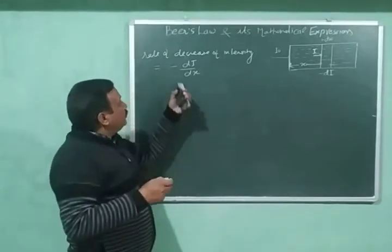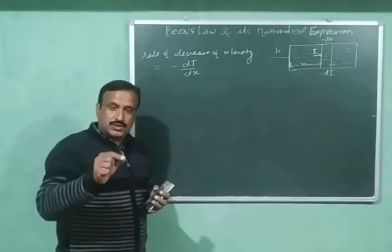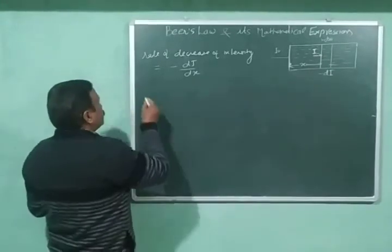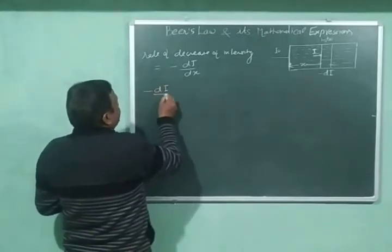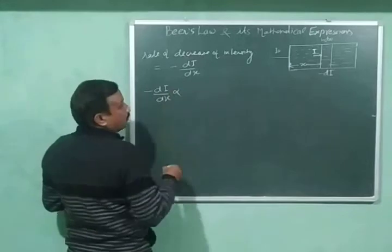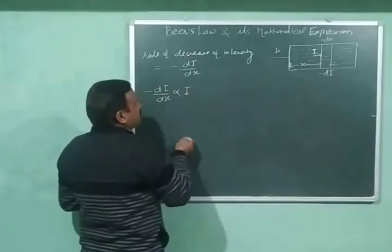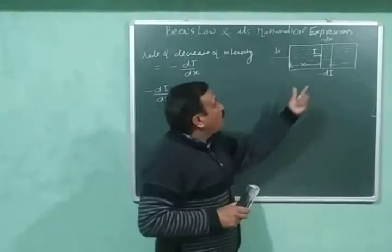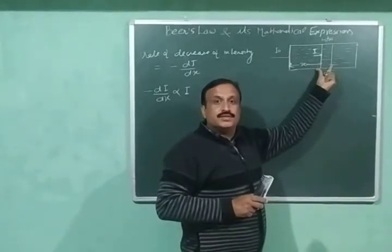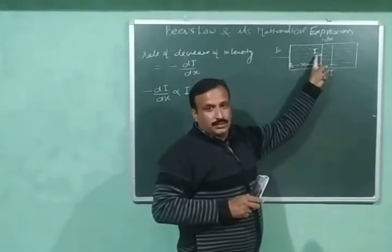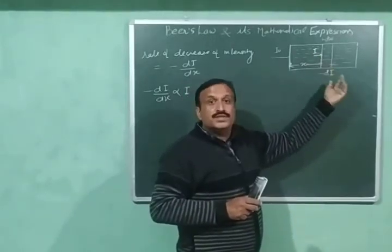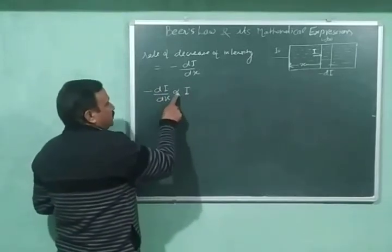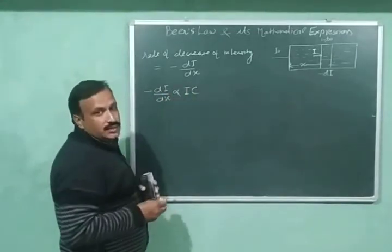According to Beer's law, the rate of decrease of intensity is proportional to the concentration of the solution as well as to the intensity of incident radiations. So −dI/dx is proportional to I, because for this thickness the intensity of incident radiation is equal to I. Therefore, −dI/dx is proportional to I·C, where C is the concentration of the solution.